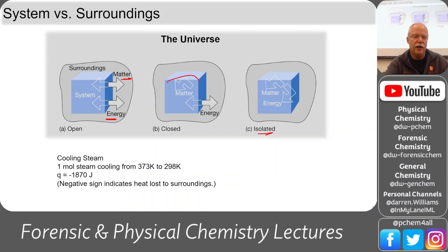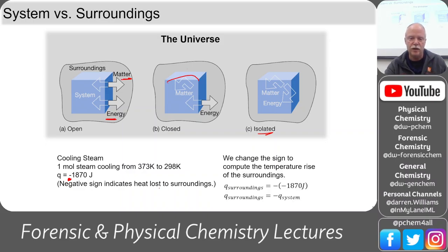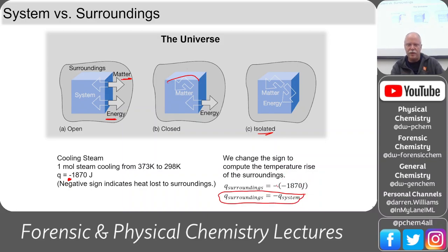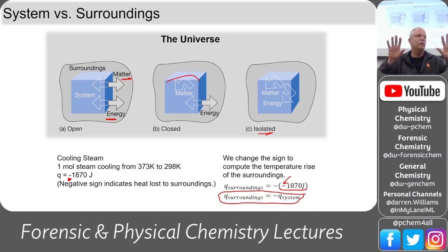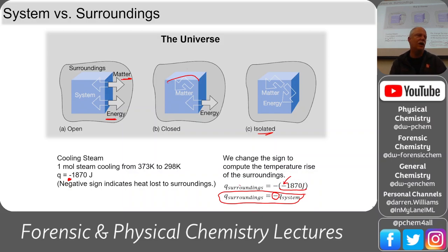For example, with cooling steam — the steam is the system. If that mole of steam cools down, heat leaves the steam and goes into the surroundings. It releases negative 1870 joules — the negative sign showing that heat is lost to the surroundings. The steam cools down, the surroundings warm up. We change the sign to compute the temperature rise of the surroundings. Students will mess up and drop that negative, so always remember one is negative and the other is positive — they're equal magnitude but opposite sign.